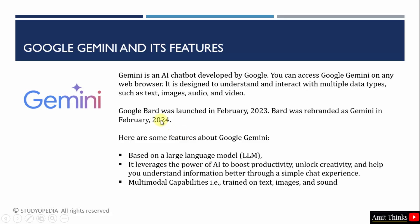Initially, Google Bard came in February 2023, then it was rebranded as Gemini in February 2024. It is based on LLMs, that is large language models. It also helps you boost productivity and ease your work by giving you real-time responses. It has multi-modal capabilities, as it is trained on text, images, and sound.